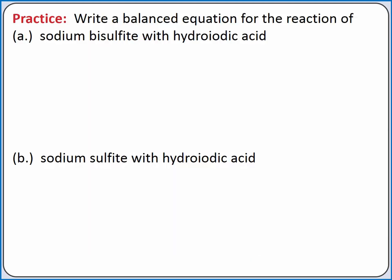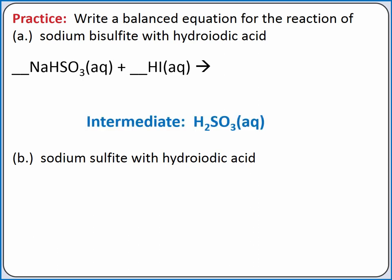Let's practice writing balanced chemical equations for gas evolution reactions. We'll start by writing the equation for the reaction of sodium bisulfite with hydroiodic acid. When we react a sulfite or bisulfite salt with a strong acid, we produce the intermediate sulfurous acid.